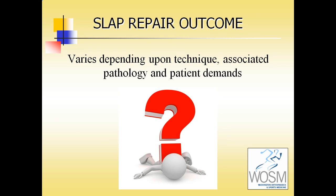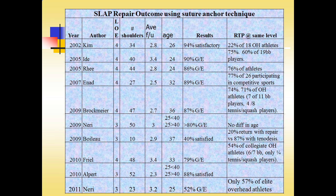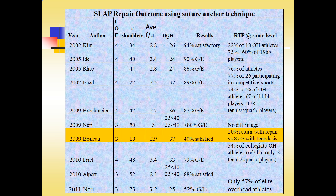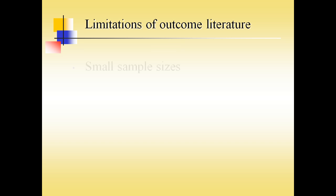Outcomes vary depending upon the technique used, associated pathology, and the demands of the patient. A number of outcome studies over the last nine years show overall good-to-excellent results in the 80 to 90 percent range, though not all studies show such favorable outcomes — one French study showed only 40 percent patient satisfaction, in a slightly older population. When looking at return to play at the same level, only about three-quarters of patients return to their pre-injury activity level. For overhead throwers in particular, only 20 to 57 percent are able to return to their previous level of throwing.